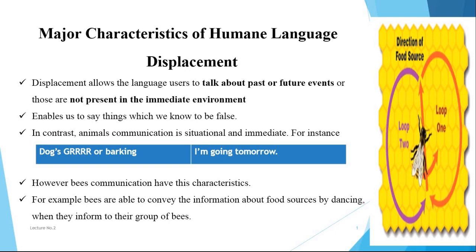The first characteristic of human language is displacement, which allows language users to talk about past or future events, or those not present in the immediate environment. You can say it enables us to communicate throughout time and across space. It also enables us to say things which we know to be false.